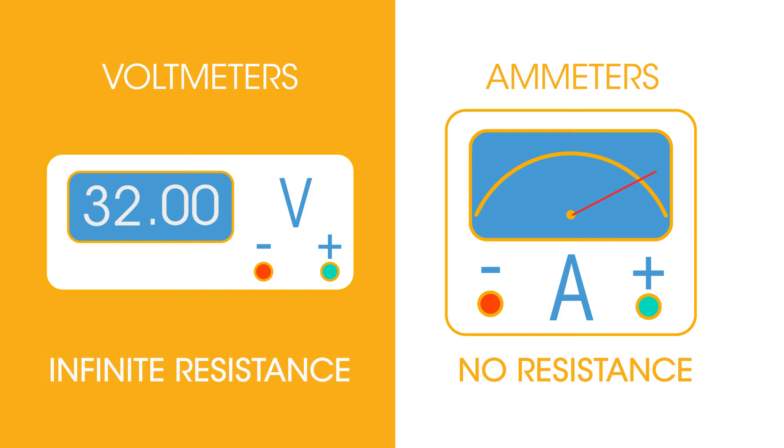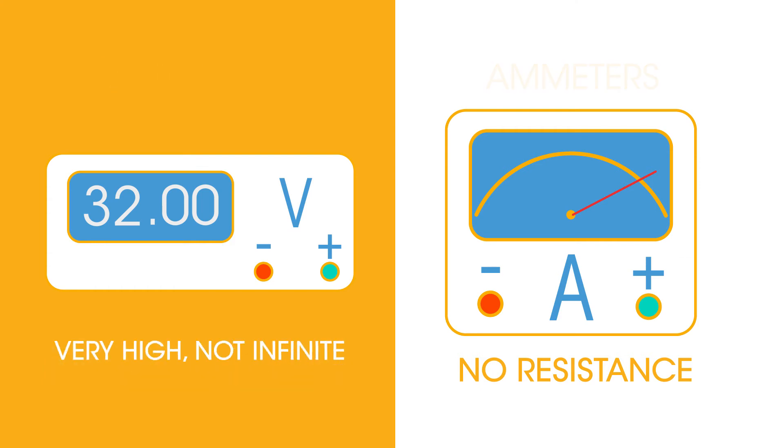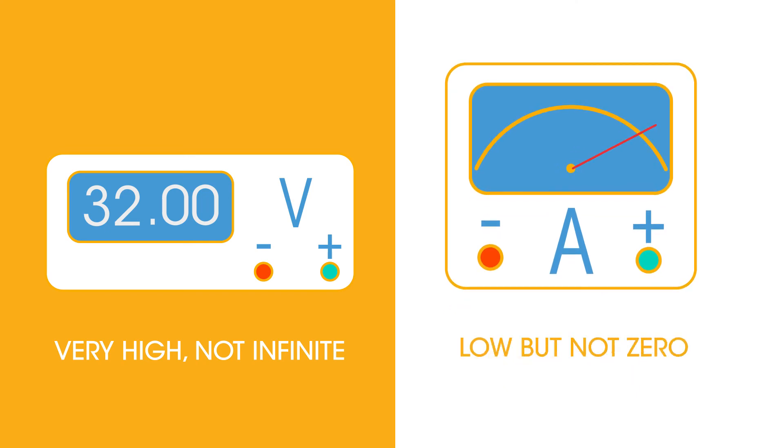In the real world, when carrying out this experiment, the resistance of a voltmeter will be very high, not infinite, and the ammeter will be low, but not zero.